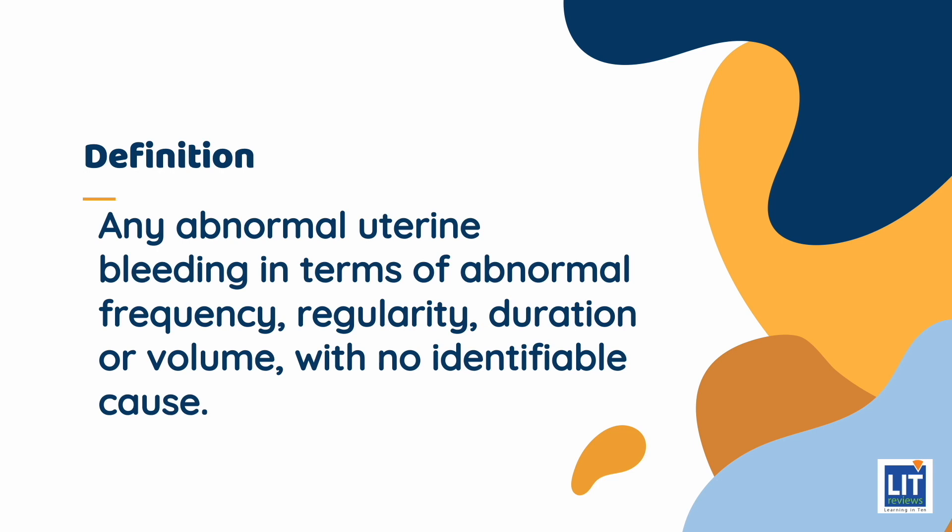Abnormalities in frequency include menstrual bleeding that starts at intervals of less than 24 days, or more than 38 days, or even amenorrhea. Abnormalities in volume include changing tampon or pad after less than 2 hours, or passing clots the size of a quarter or larger. Intermenstrual bleeding is also included. Abnormalities in duration refer to prolonged menstrual bleeding, defined as bleeding consistently lasting more than 8 to 10 days.